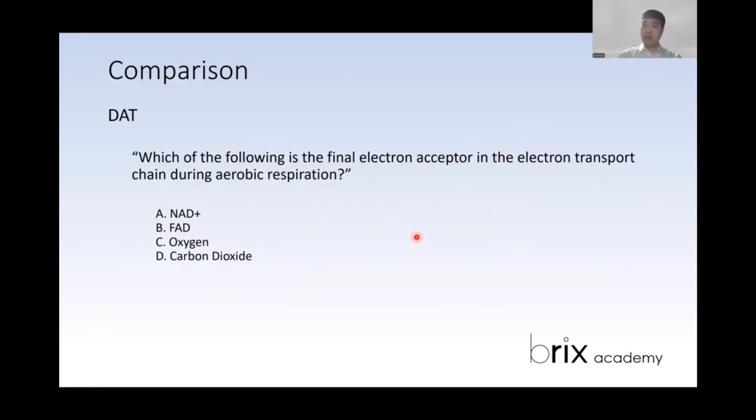Now let's get MCAT, which is during aerobic respiration, electrons from NADH are transferred to the electron transport chain. If complex one is inhibited, which of the following is most likely to occur? Here we are looking at the electron transport chain, but now we need to look at the overall big picture, the whole chain itself and see, this part is inhibited, so what are the next following steps that are going to be affected?